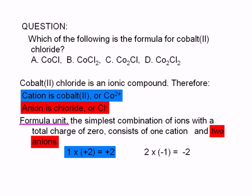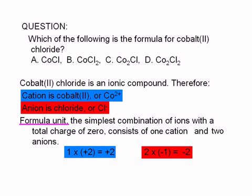1 times +2 is +2. And the 2 chloride ions will have a total charge of -2. 2 times -1 is -2.